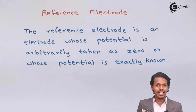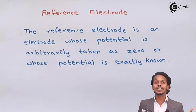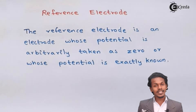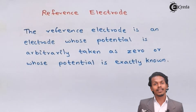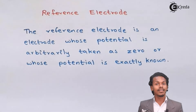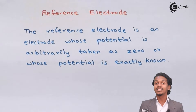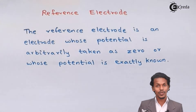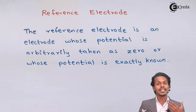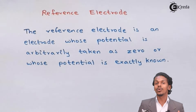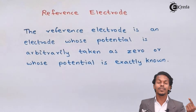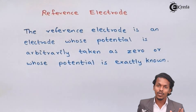The overall EMF of the cell can be calculated as: E0 of cell equals E0 of cathode minus E0 of anode. So the overall cell potential we get will apply to the other electrode, and hence we could calculate the EMF of the electrode whose potential was not known to us. These are the functions of a reference electrode — it is used to determine the electrode potential of the other electrode connected to it.